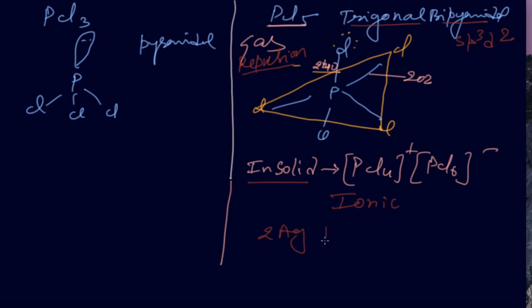2AgCl + PCl5 reacts with metal. Simple reaction is going on: silver chloride with PCl5 gives you 2AgCl2 + 2PCl3.